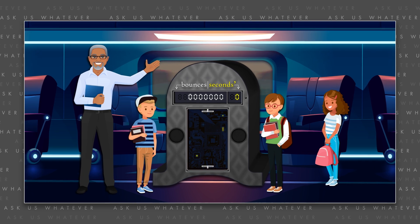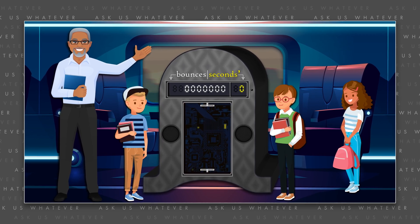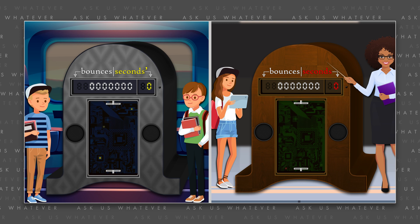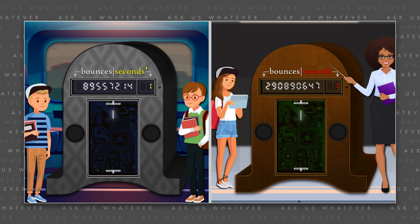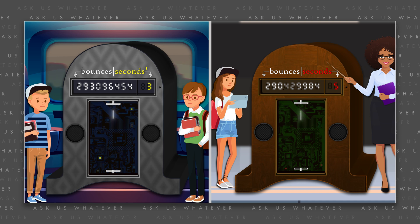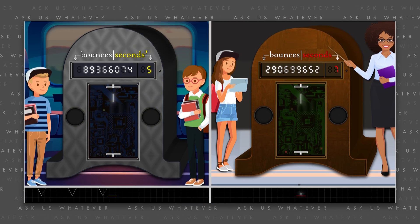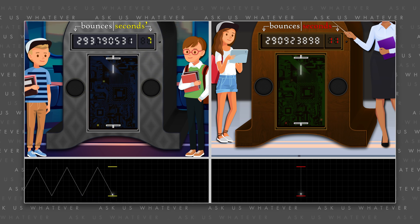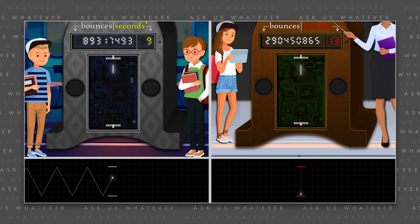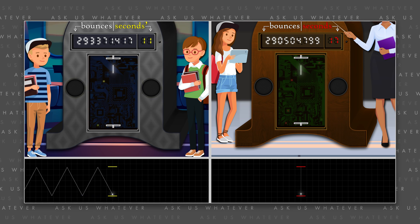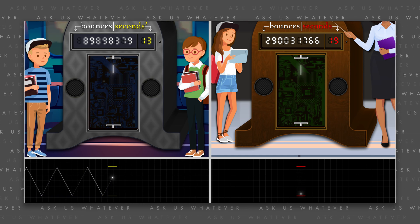Another physics teacher on a train suggests the same thing to his students for a light clock on the train. If the two groups of students run their experiments together, the counting device in the station will beep more frequently than the counting device on the train, because the light on the train must travel a longer diagonal path between bounces. Since light is presumed to travel at the same speed in both inertial reference frames, the light clock in the station will rack up 300 million bounces sooner and more often than the light clock on the train.